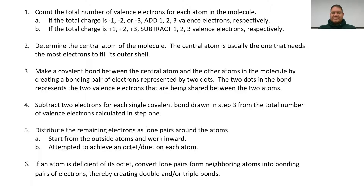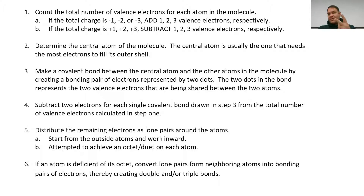If it's a negatively charged atom — an anion — add the charge number to the valence electron total. So if the charge is negative two, add two valence electrons to your total; if it's negative three, add three. If it's a positive cation, subtract instead — if it's positive two, take away two valence electrons from the total; positive three, take away three.